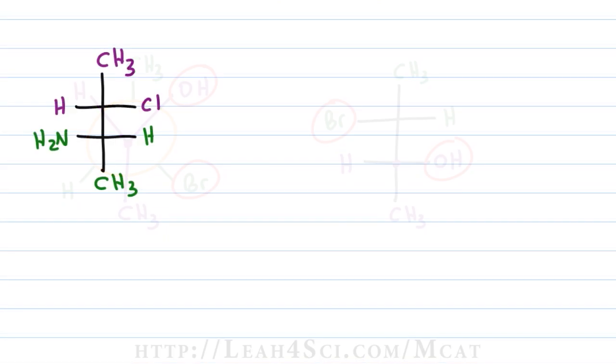Now what happens if you're given a Fisher projection and asked for the Newman? Well this one is much easier. Start out by drawing the circle for your Newman projection and then choose where you want to place your carbons. I want the green carbon forward and the purple carbon to the rear. You can draw the Newman as staggered or eclipsed and this will depend on what your professor asks for or the choices that are represented on your exam.